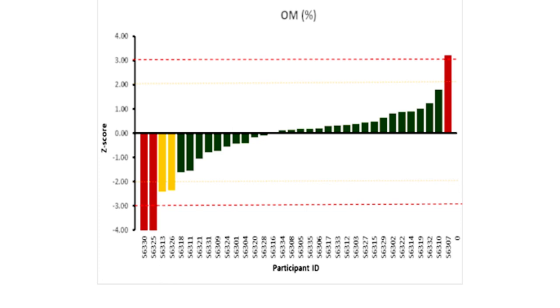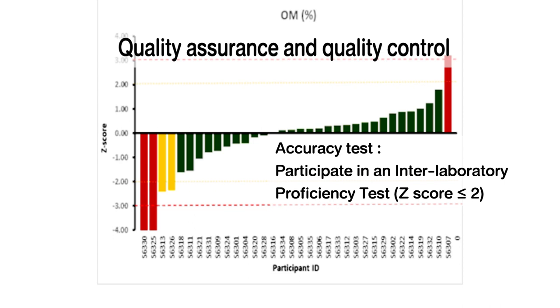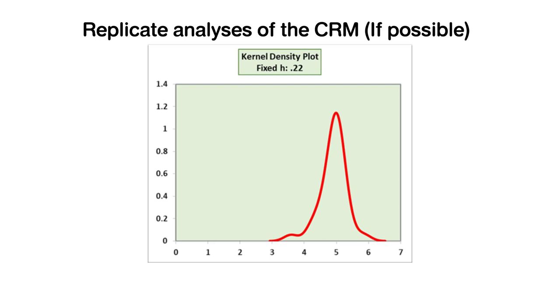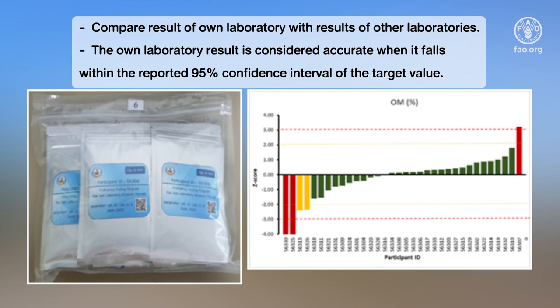For accuracy, we participate in an interlaboratory proficiency test at least once a year. The PT z-score should be less than 2. If not, identify root cause, develop corrective and preventive actions, and address the problem. Perform replicate analysis of the certified reference material. Compare results of your laboratory with results of other laboratories as provided in the performance analysis report or certified reference material certificate. Your laboratory result is considered accurate when it falls within the reported 95% confidence interval.